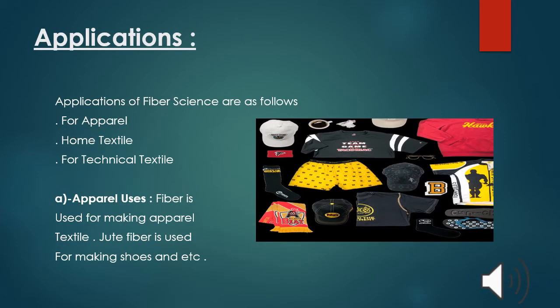Applications of fiber science are as follows: for apparel, home textile, for technical textile. Apparel uses - fiber is used for making apparel textiles like shirts, jeans, etc. Jute fiber is used to make shoes. These are the pictures of different apparel clothes which we wear in different seasons.